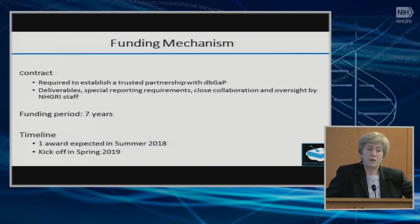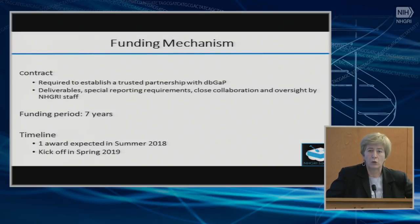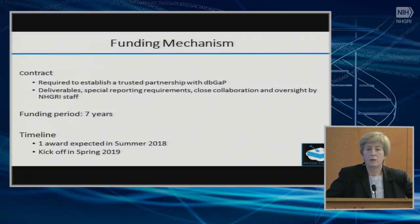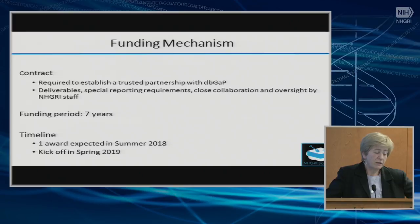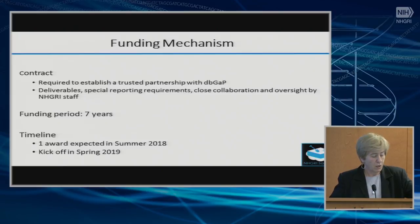The funding period is for seven years — selected to ensure this resource has time to develop and be tested for utility to both outside users and consortium members. Typical NHGRI-funded programs are for five years. There will be milestones set up; if the project is not successful, it will not be supported further. Because this is a contract, it will take a while to issue an RFP. We think we should be able to have an award in the summer of 2018, and about nine months after that, have a resource open to the public.